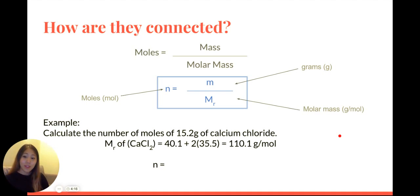Let's take a look at an example. Calculate the number of moles of 15.2 grams of calcium chloride. Calcium chloride, if you do your crisscrosses to calculate your chemical formula, should be CaCl2.